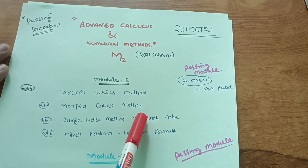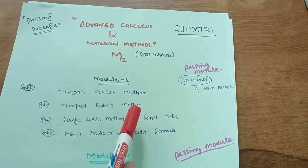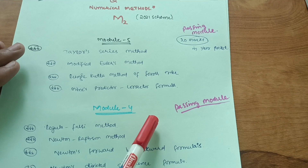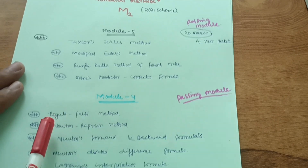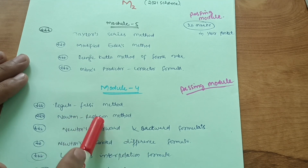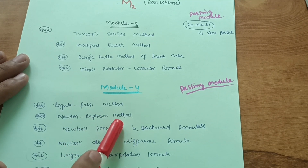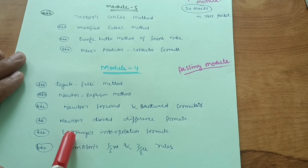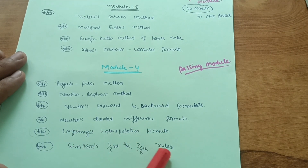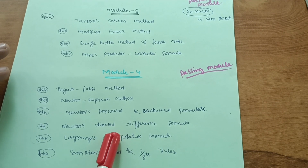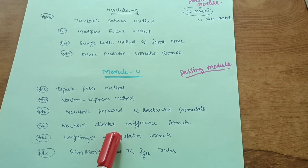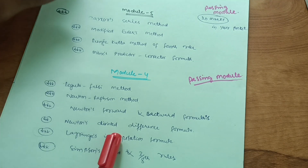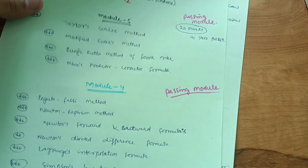You can cover 20 marks with ease from Module 5 — you should not leave any concept from this module. Module 4 is also a passing module, so another 20 marks are already in your pocket. Focus on Regula Falsi method and Newton-Raphson method — no need to go for the derivation part. Also cover Newton's forward and backward formulas, Newton's divided difference formula, Lagrange interpolation formula, and Simpson's one-third and three-eighths rules. These six topics cover Module 4 easily.